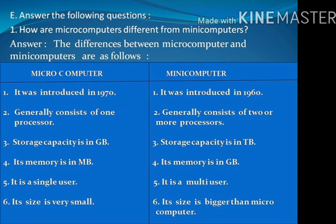Number 3: Microcomputers' storage capacity is in GB, but minicomputers' storage capacity is in TB. Number 4: Microcomputers' memory is in MB, but minicomputers' memory is in GB.